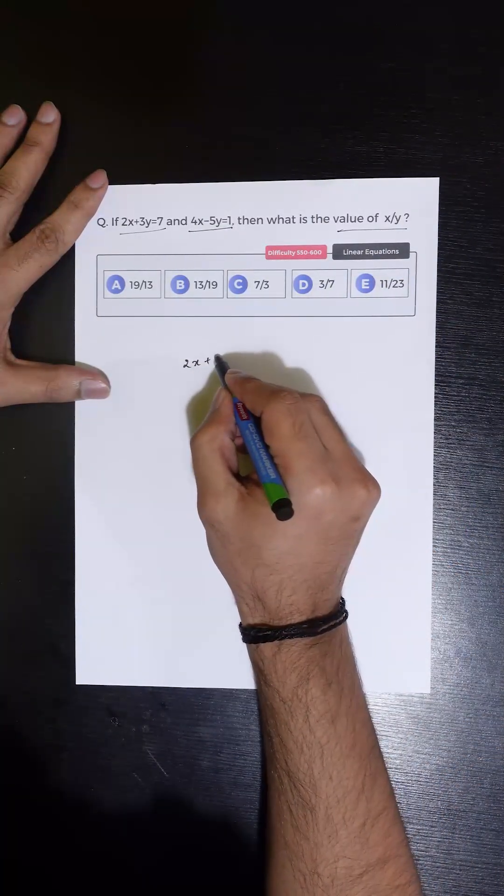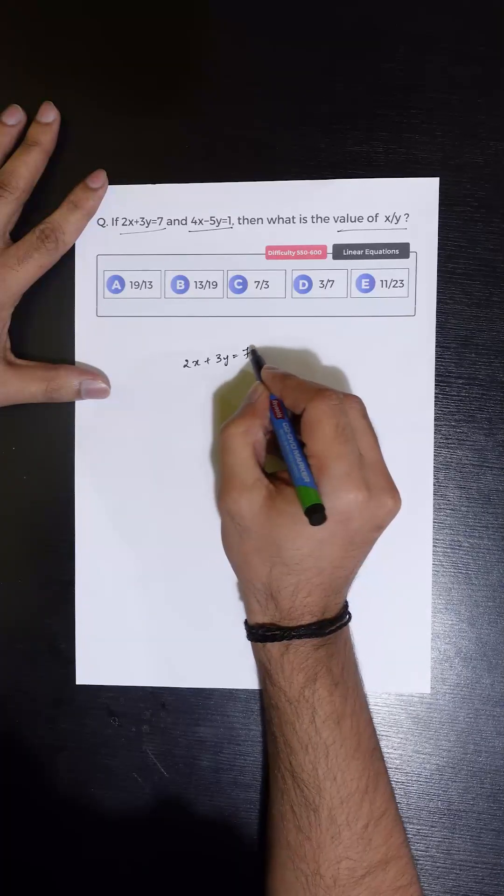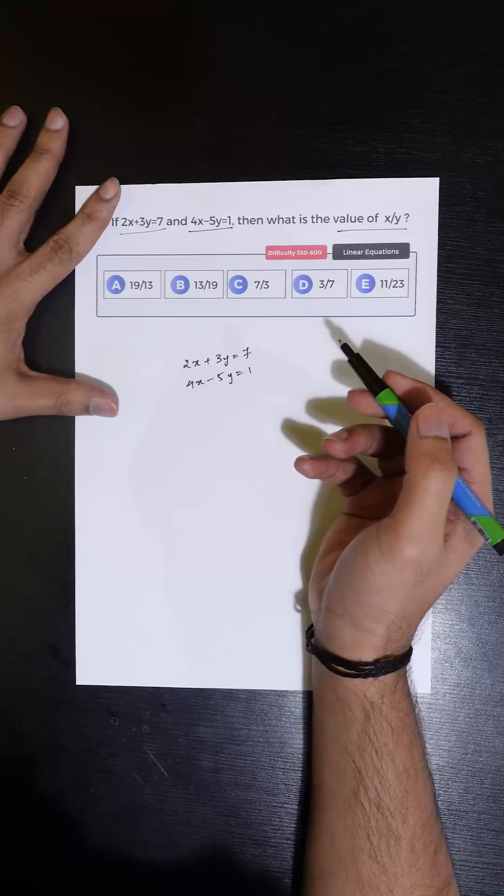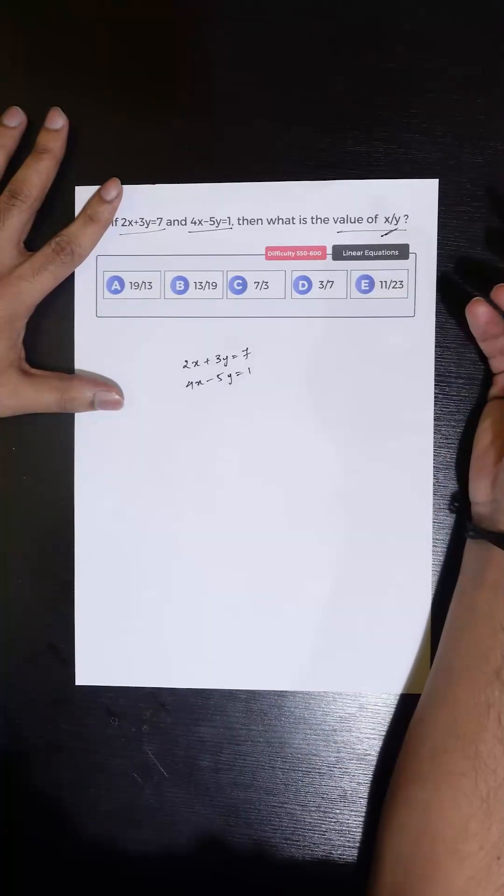So we are given two equations and two variables. We can solve these two equations and find the values of x and y, and then we can calculate the value of x by y.